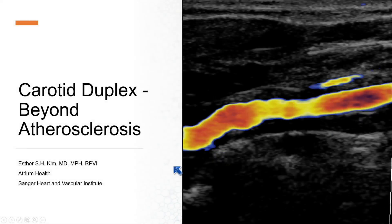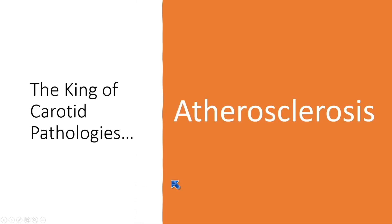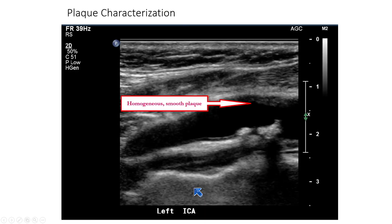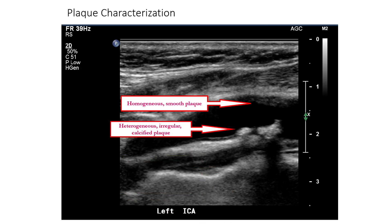I'll be talking about non-atherosclerotic carotid disorders and imaging of these disorders. When thinking about carotid pathologies, we need to know what atherosclerosis looks like in order to understand what non-atherosclerotic diseases are. When we talk about plaque characterization, we describe things as homogeneous or smooth, heterogeneous, or irregular calcified plaque.